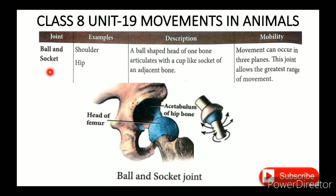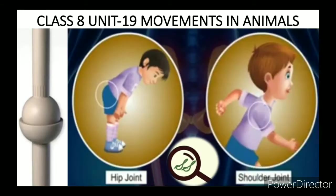The first of the six major types of movable joints is the ball and socket joint. Examples include the shoulder and hip.